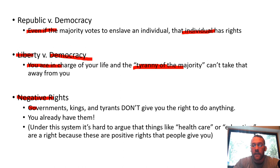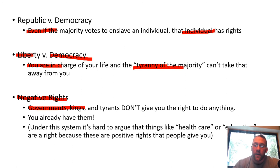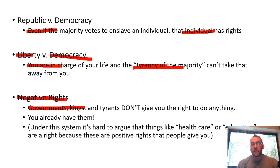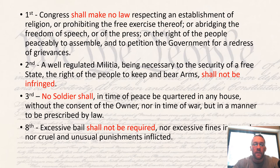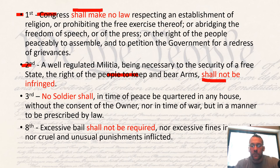Long story short, negative rights are things the Constitution protects — they're not things governments and kings give to you; positive rights are things that governments and kings might give to you. One of my big pet peeves is when people say 'the Constitution gives me the right to speak freely.' The Constitution doesn't give you the right to do anything — it already assumes you have those rights. The Constitution is a letter to the government that says, 'Dear government, you cannot infringe upon those rights.' The United States has negative rights. The First Amendment, the Second Amendment — the Constitution is a list of things the government cannot do to you.